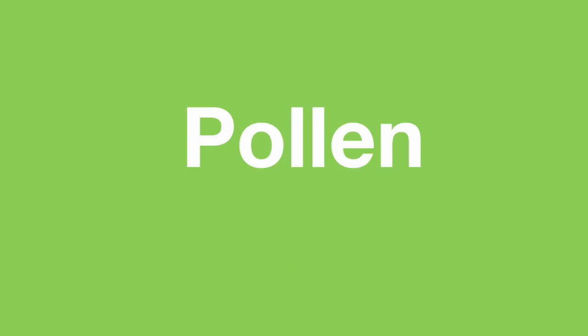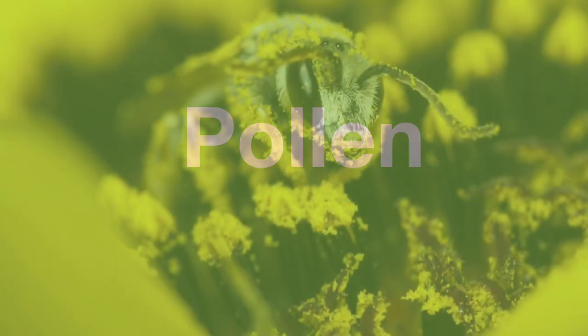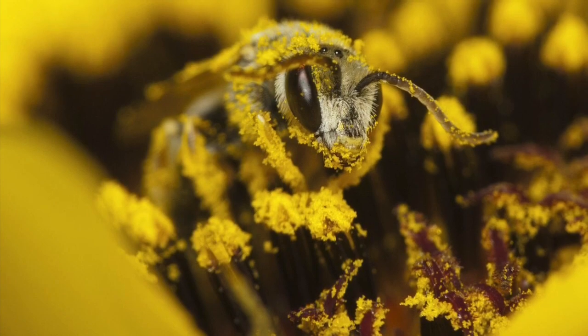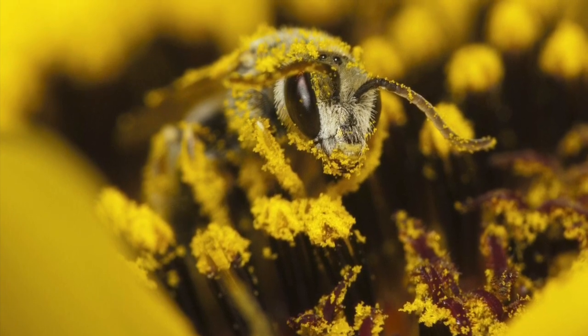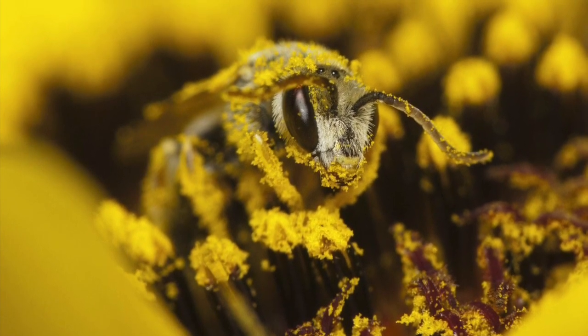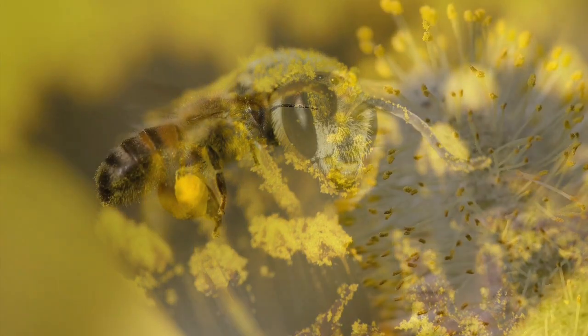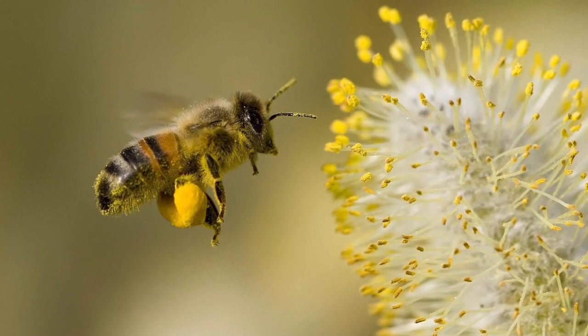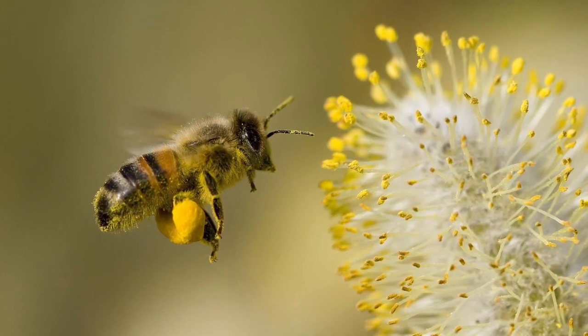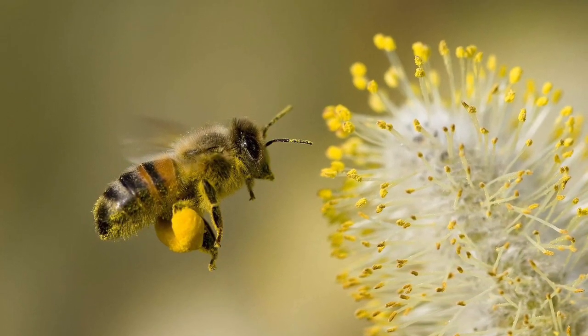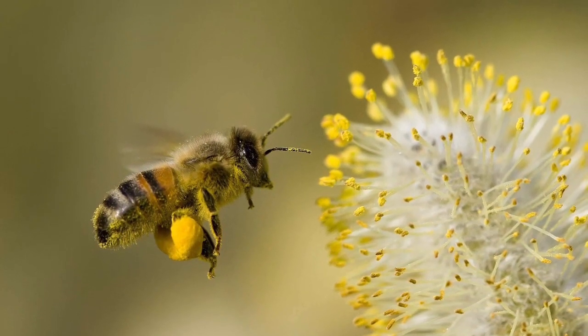It's a good idea for you to understand what pollen is. Pollen is the male sex cell or gamete of a plant, so it is used to fertilize the ovule. And that's the male part of the flower complete — the stamen.